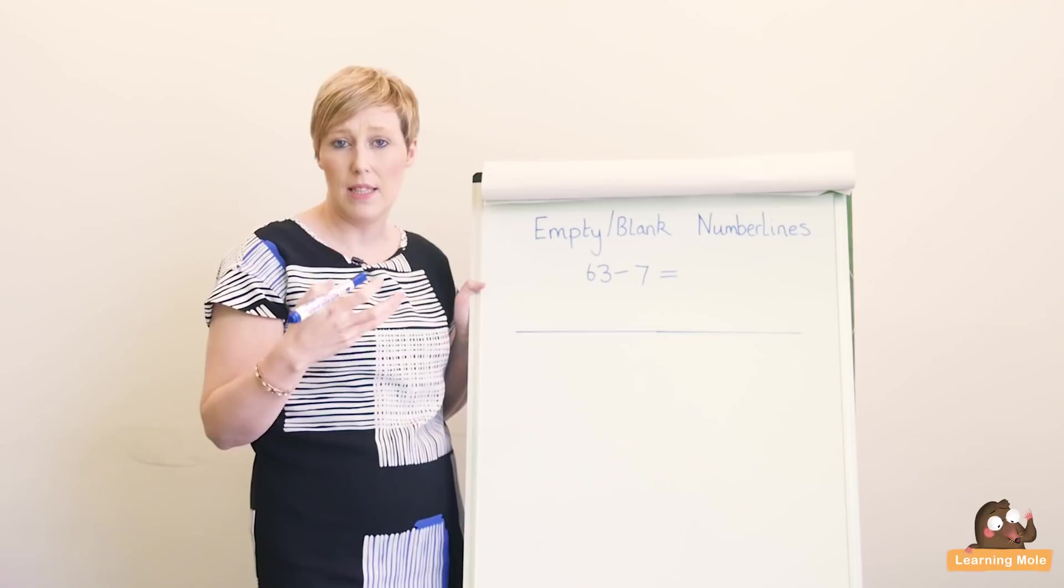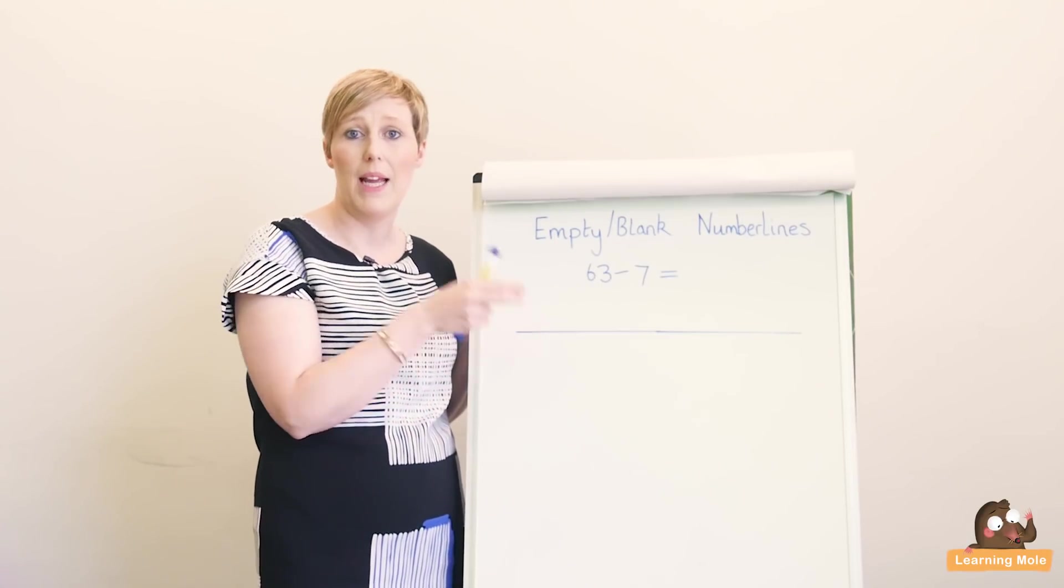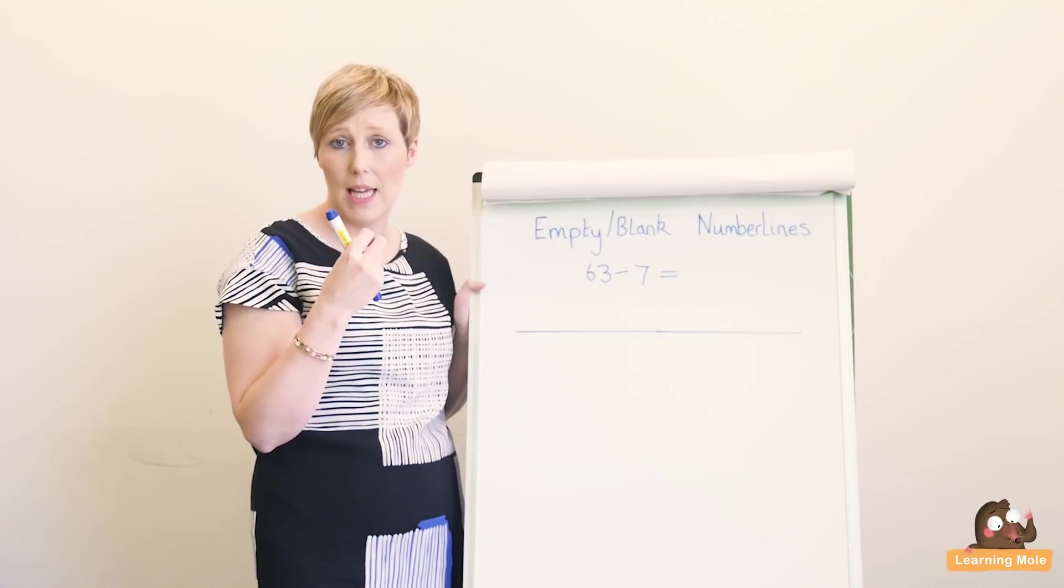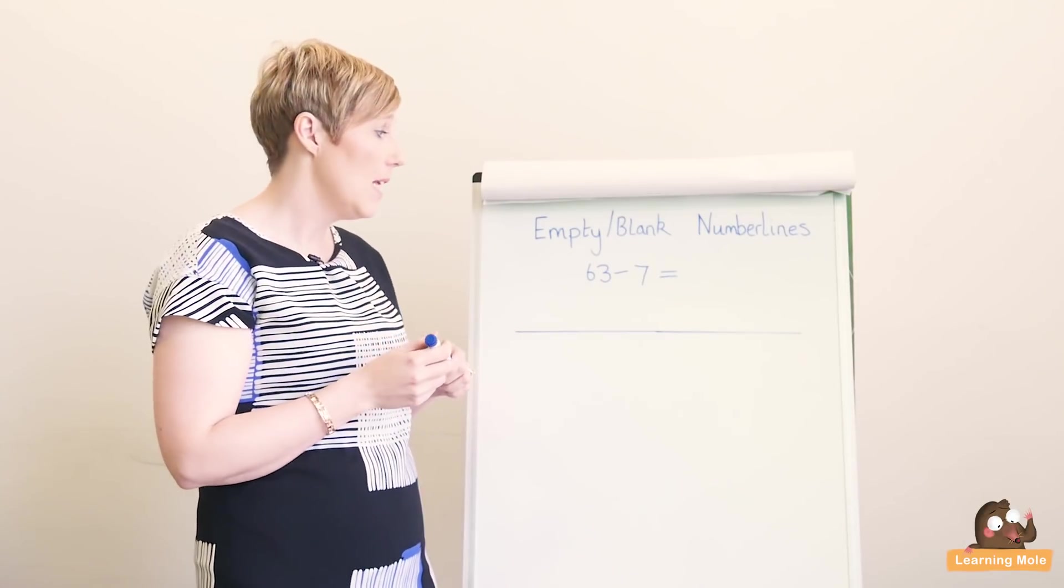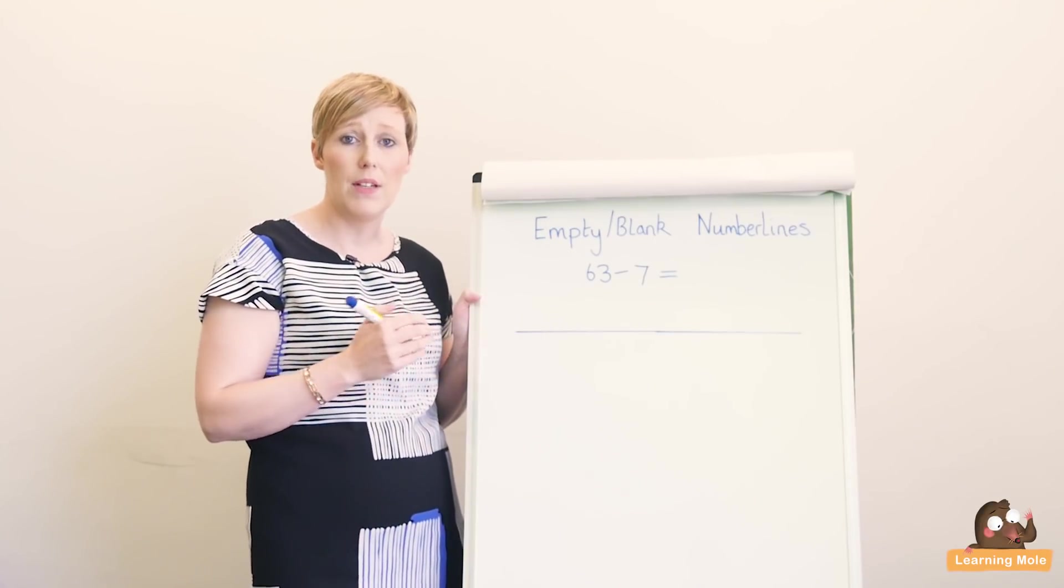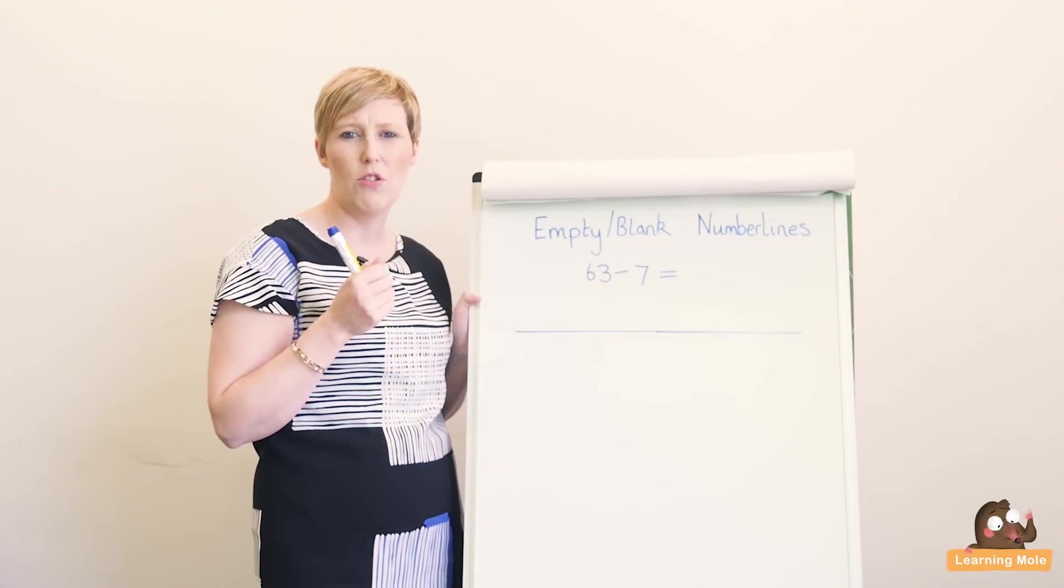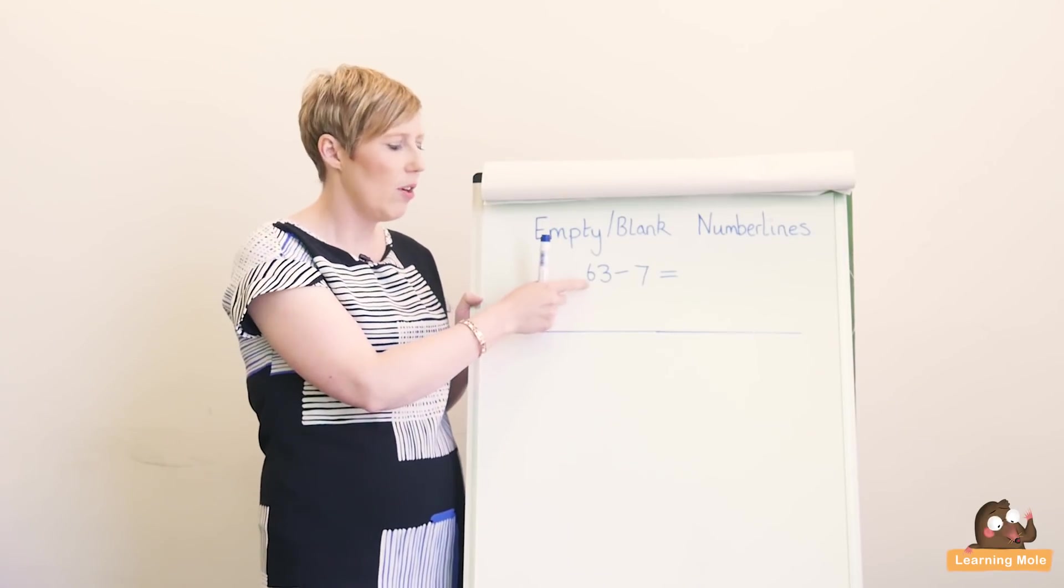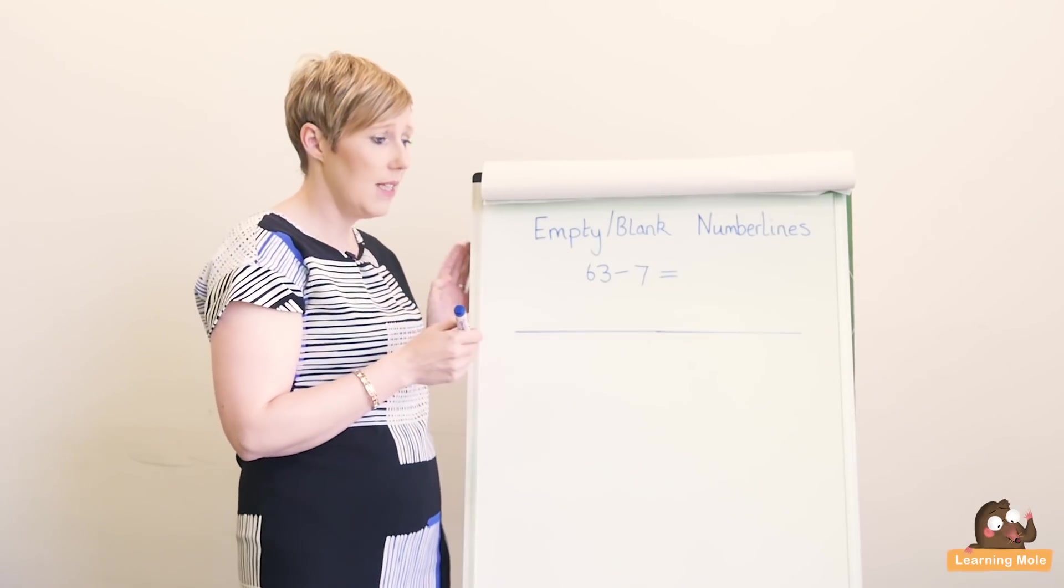It's all back to visualizing the numbers so they're able to move from this idea of a blank number line into actually being able to do this mentally. It's about giving them the understanding of what they're actually doing. For something like 63 take away 7, your child might be able to do that in their head, but if they're still struggling, especially with crossing that tens barrier, you want to give them something visual like this.